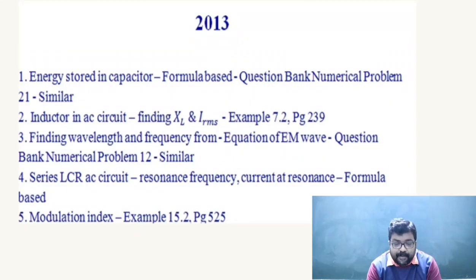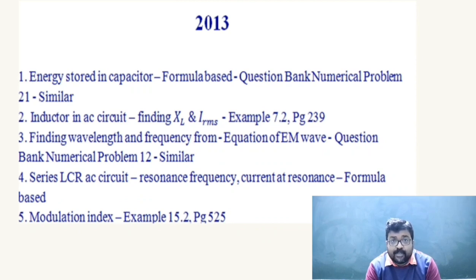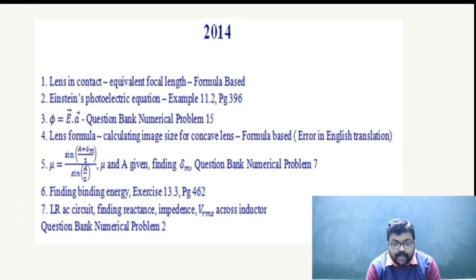In 2013: calculating energy in a capacitor — Question Bank Numerical Problem 21. Inductor in an AC circuit finding X_L and I_RMS — Example 7.2, page 239. Finding wavelength and frequency from the electromagnetic wave equation — repeated from 2012, Question Bank Numerical Problem 12. Series LCR AC circuit finding resonant frequency and current at resonance — formula based. Modulation index — Example 15.2, page 525, from NCERT.